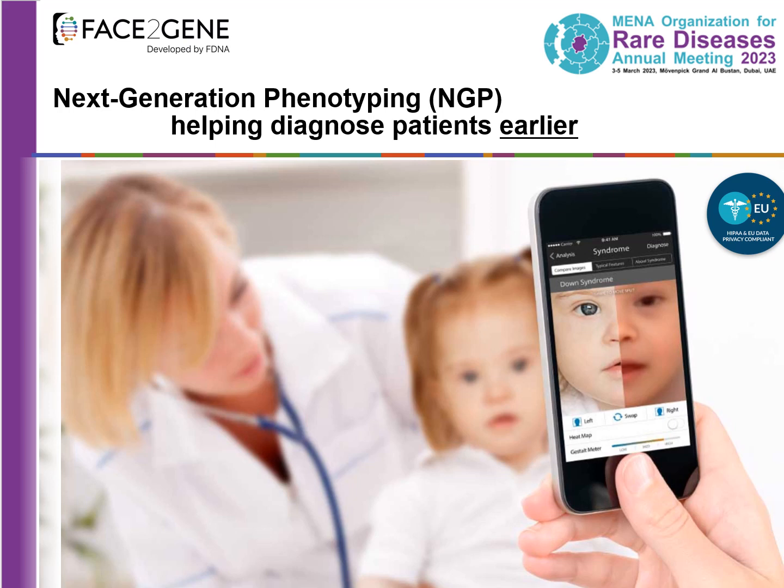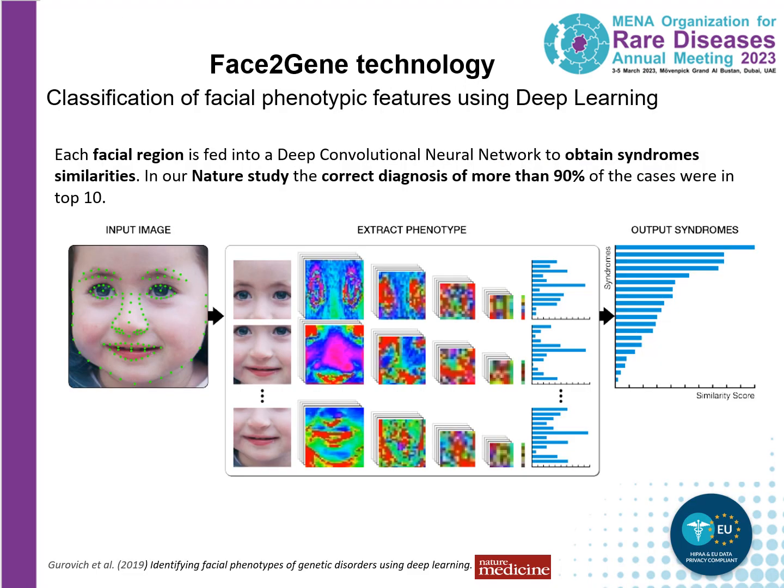Face2Gene is an app that uses AI tools, and this app is available to medical geneticists worldwide. It is HIPAA as well as EU data compliant, and medical geneticists have used this tool for years successfully. The Face2Gene technology uses a deep convolutional neural network in order to analyze facial features. A photograph is taken, and the tool places landmarks over the face. The face is divided into predefined regions, and each of these regions is then analyzed. The abstracted data are then compared to abstracted data from syndromic conditions which the Face2Gene tool has previously been trained on.